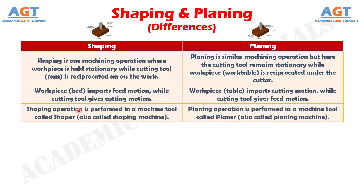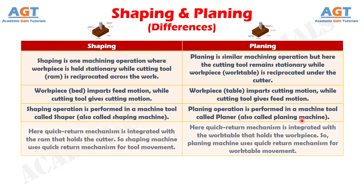Number 3: Shaping operation is performed in a machine tool called shaper, also called shaping machine, whereas planing operation is performed in a machine tool called planer, also called planing machine. Number 4: In shaping operation, quick return mechanism is integrated with the ram that holds the cutter.